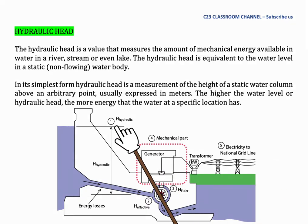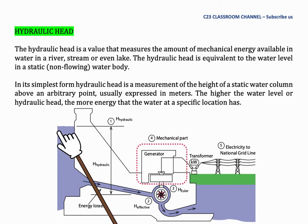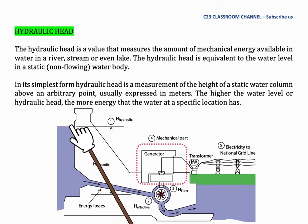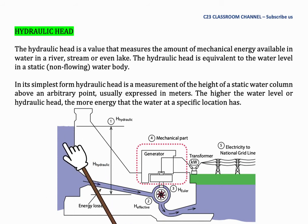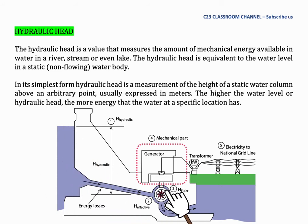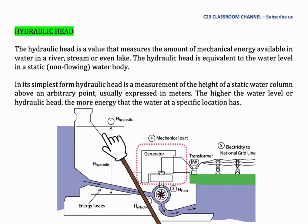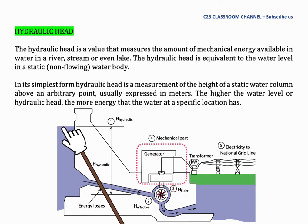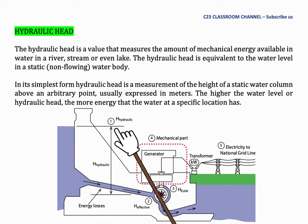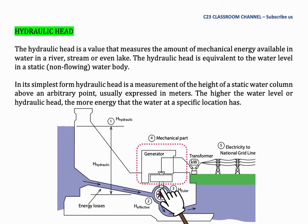If we see this diagram, we have a dam here and this is the water level. This water will flow to the turbine here with a pipe system. The hydraulic head is the distance from the level of water here to the central point of the turbine.